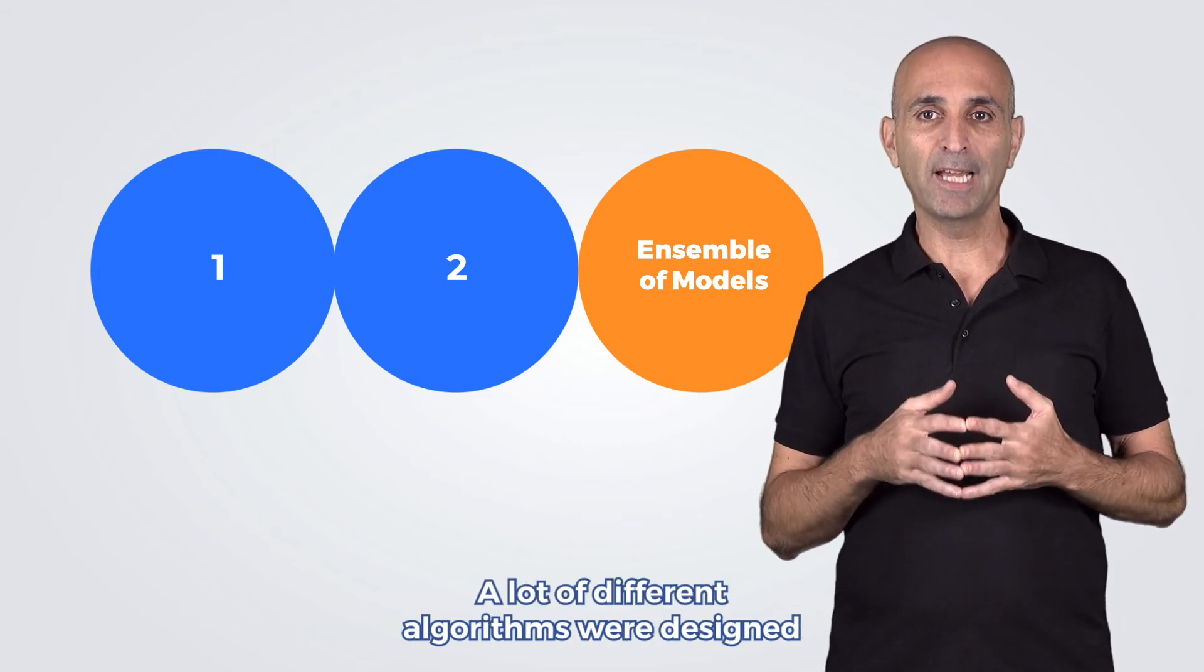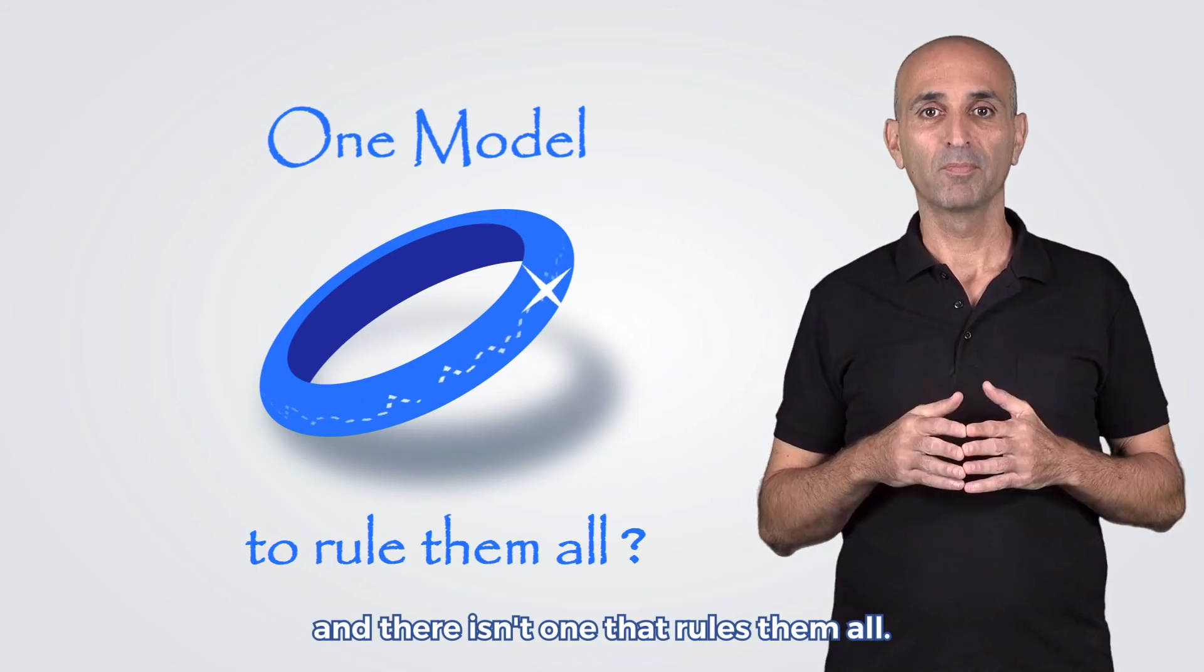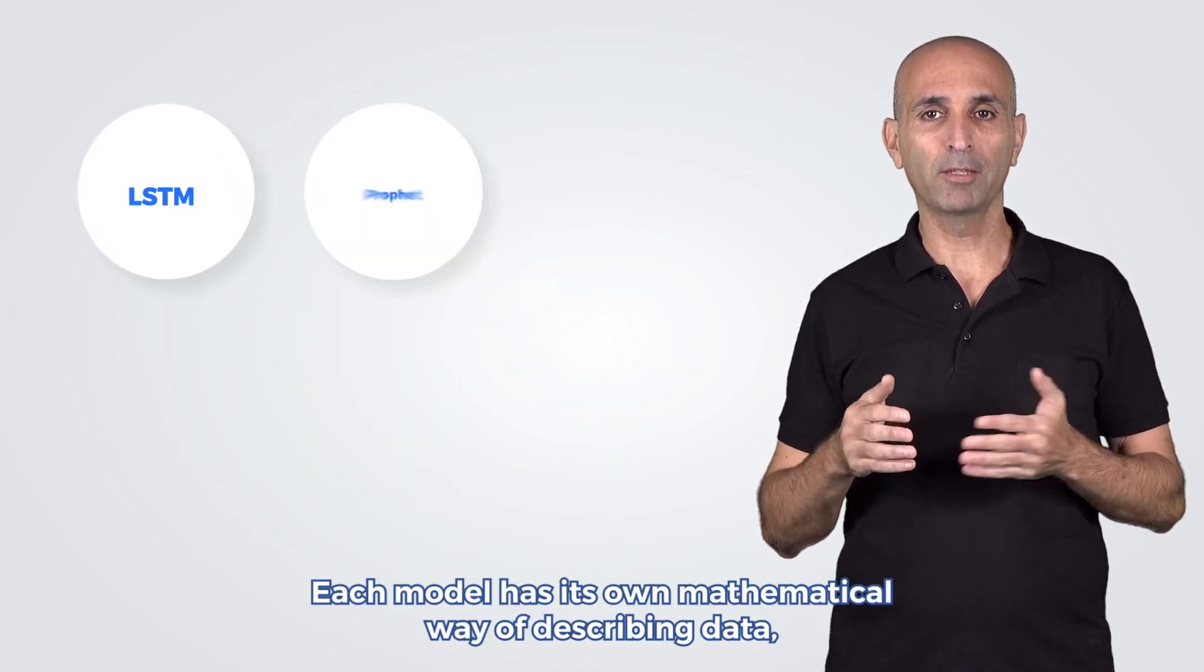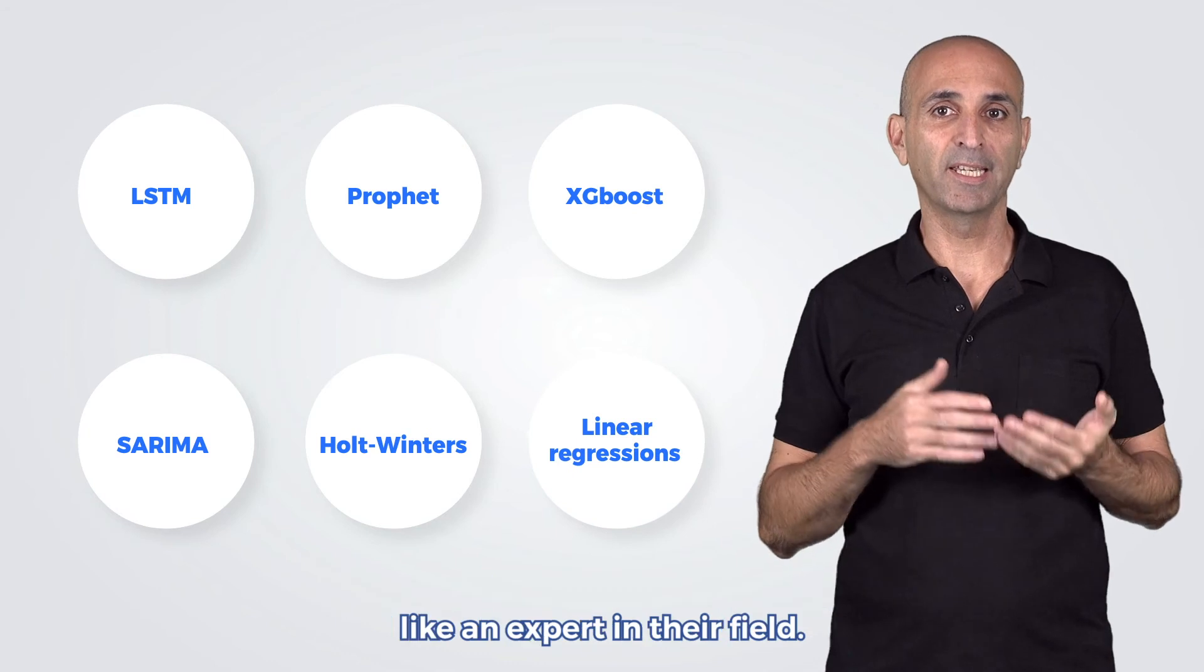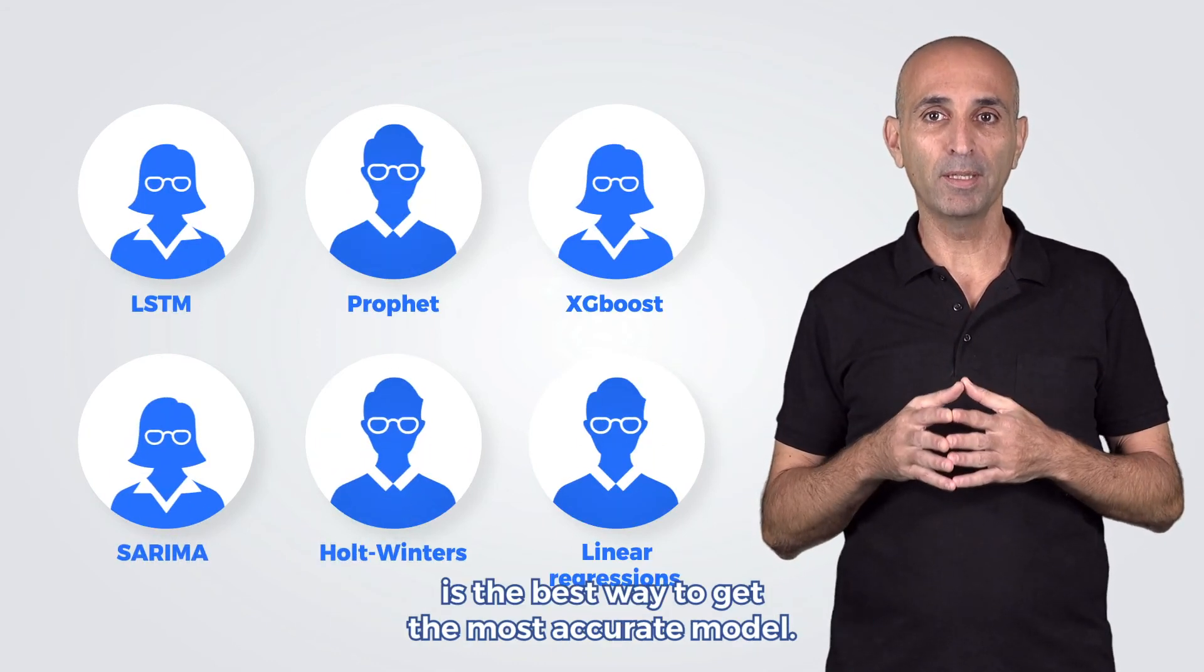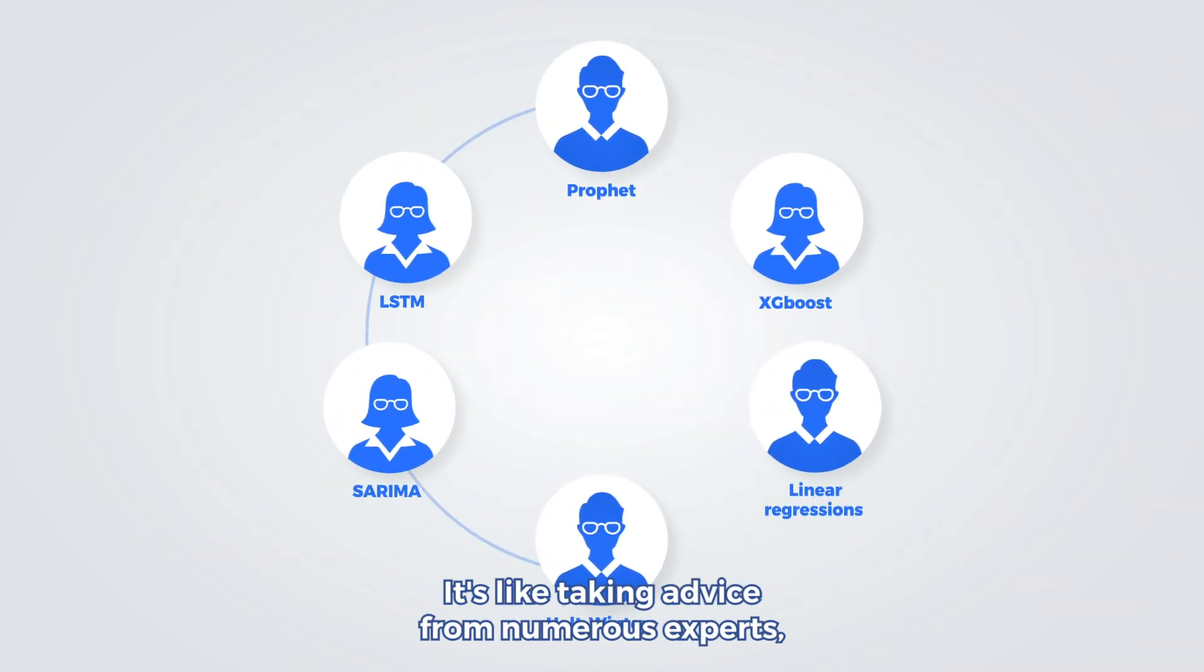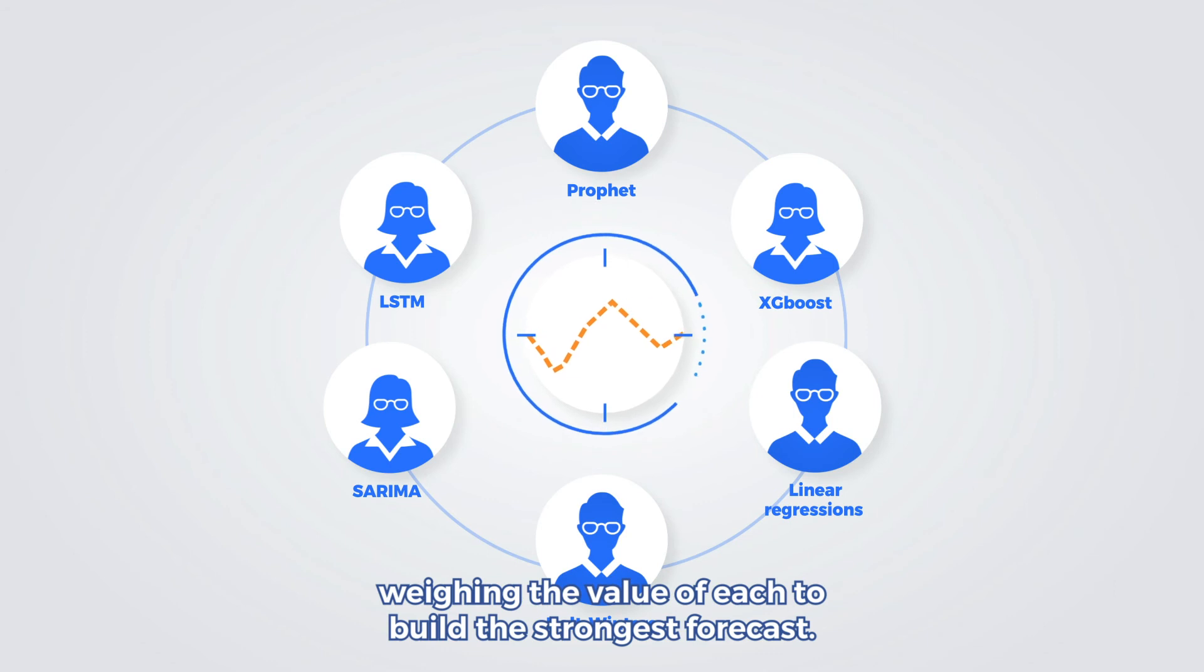A lot of different algorithms were designed for time series forecasting and there isn't one that rules them all. Each model has its own mathematical way of describing data, like an expert in their field. Ensembling these models together is the best way to get the most accurate model. It's like taking advice from numerous experts, weighing the value of each to build the strongest forecast.